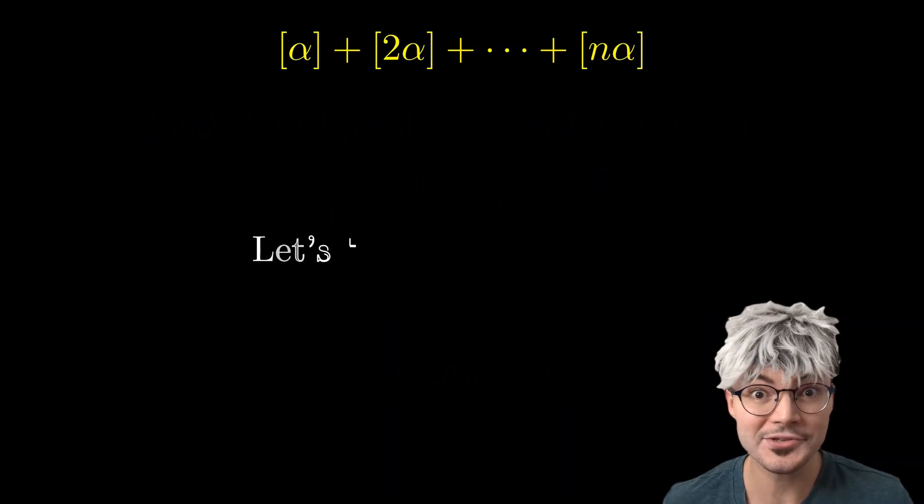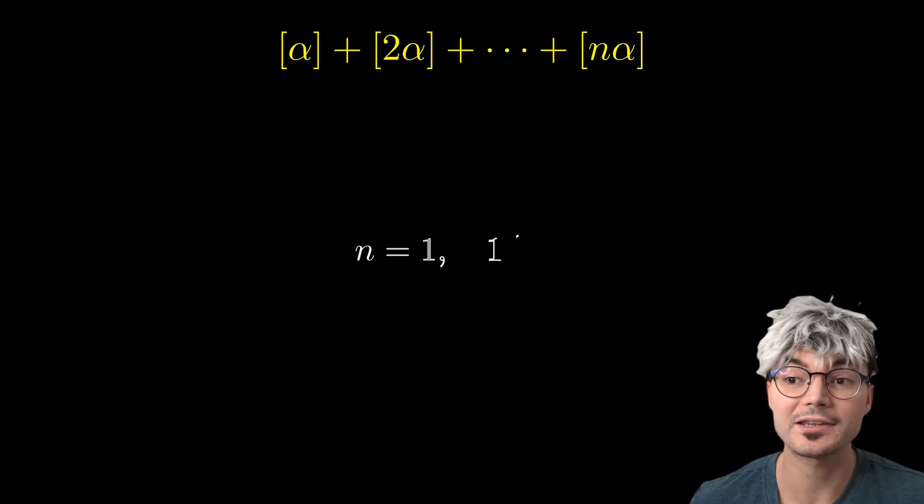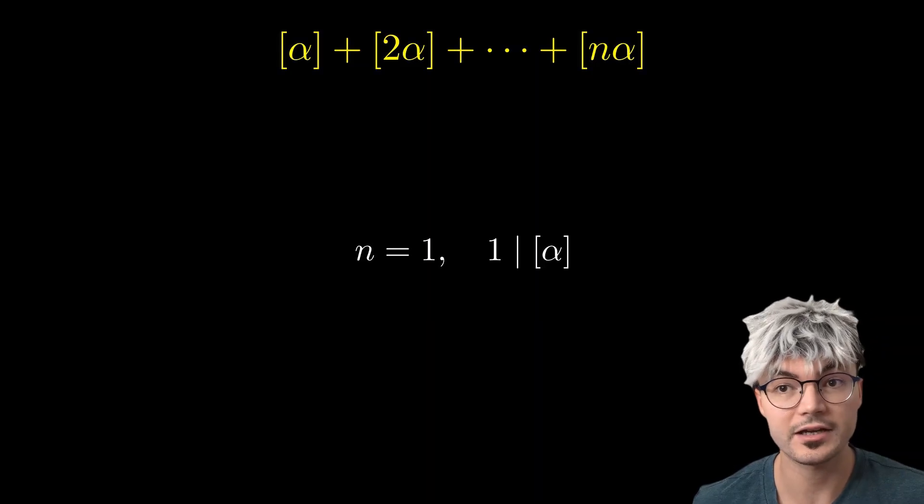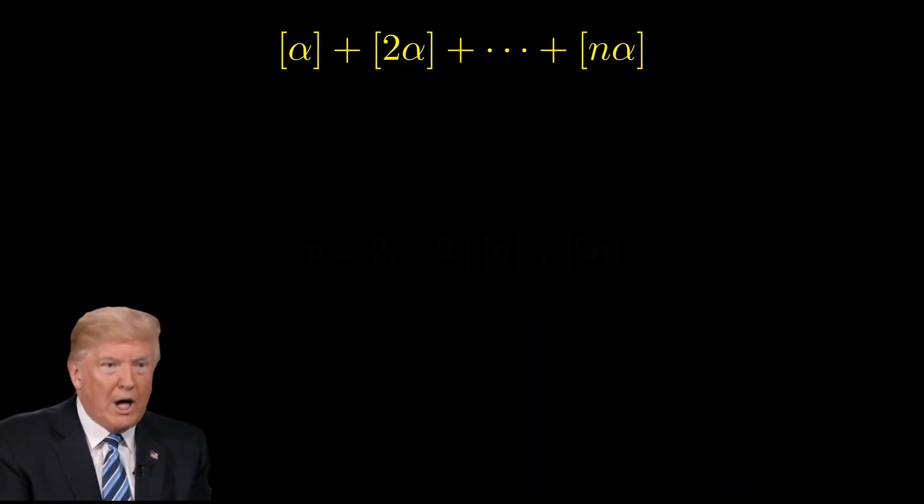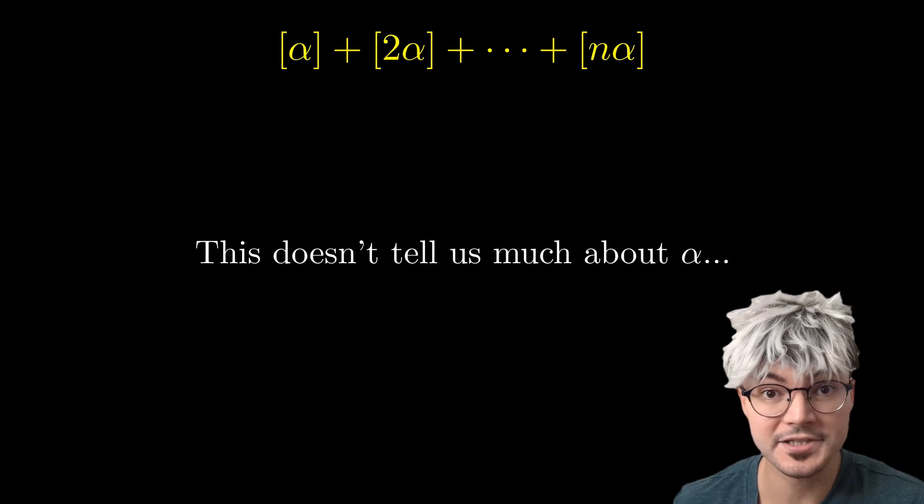Let's try some values of n to understand the problem. For n equals 1, we get that 1 divides the floor of alpha. n equals 2 is useless, as is n equals 3. Well, this does not tell us much about alpha.